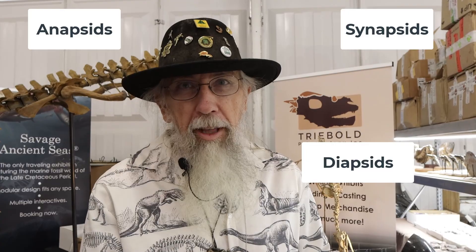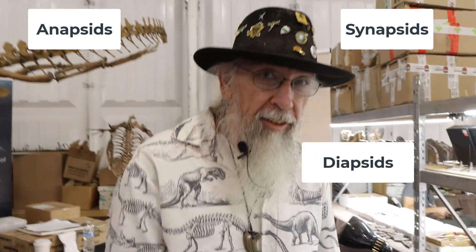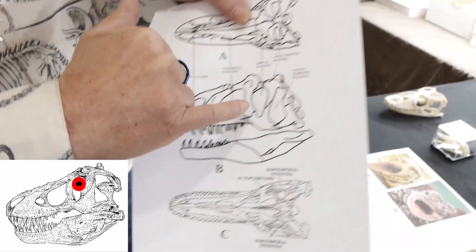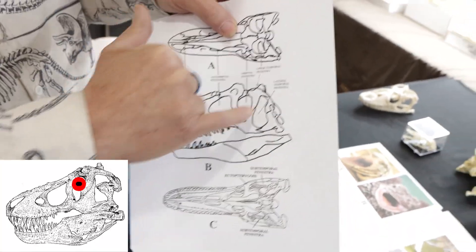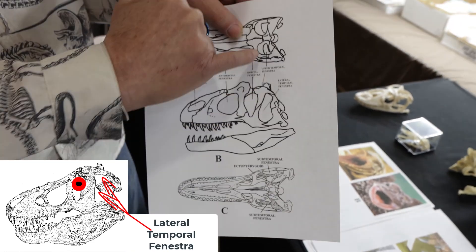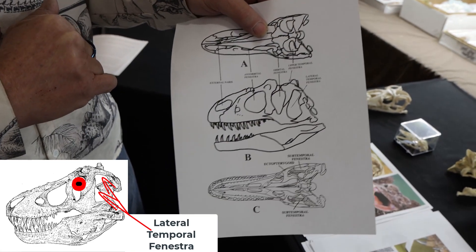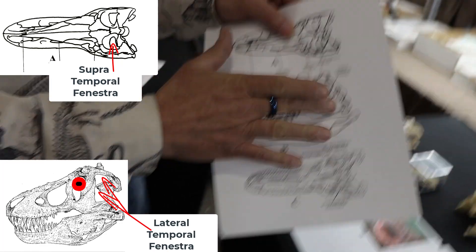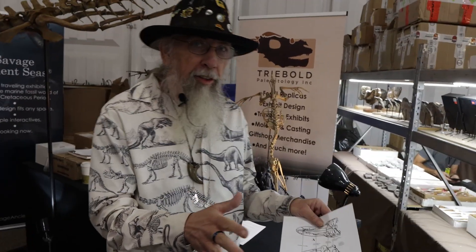Reptiles in general are divided into different groups: we've got anapsids, synapsids, and diapsids. Basically what it means is holes in the heads — not just all the holes, but actually the holes behind the eye. This is the eye, so this is the sub lateral temporal fenestra, and that one is the super temporal fenestra.